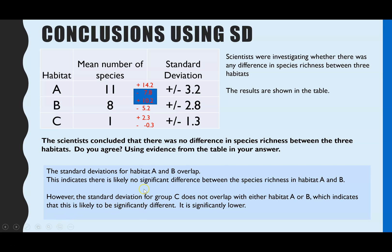However, the standard deviation for group C does not overlap with either habitat B or A. And that indicates it's likely to be a significant difference. And in this case, it's significantly lower. So that is our evidence which goes against the conclusion. And that's what they'd be after. They're not interested in whether you actually say yes or no. They want you to use the data to say the two sides of the argument.